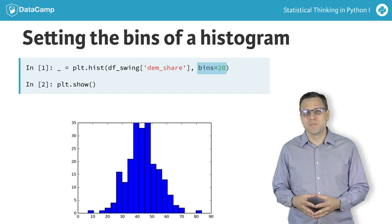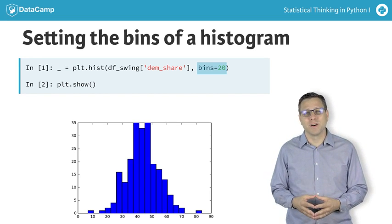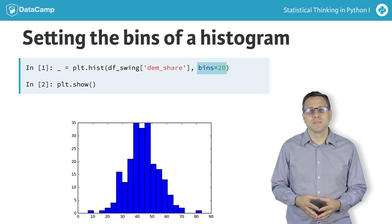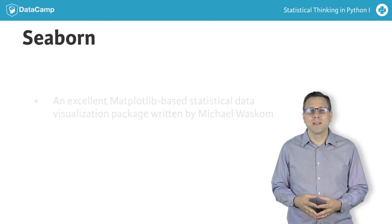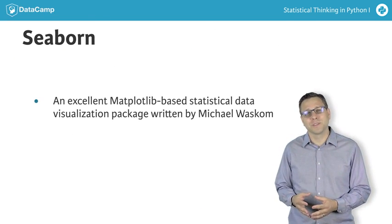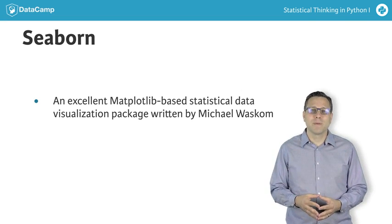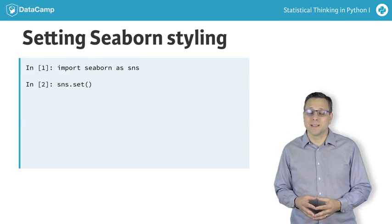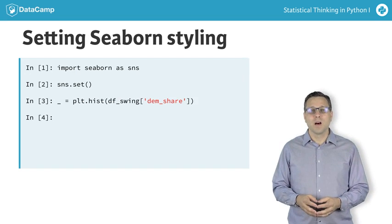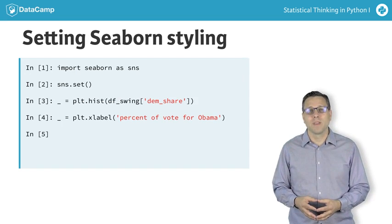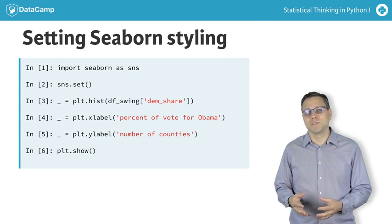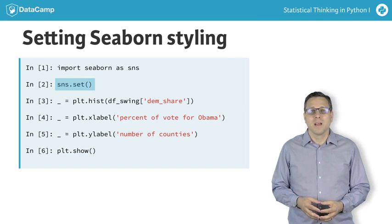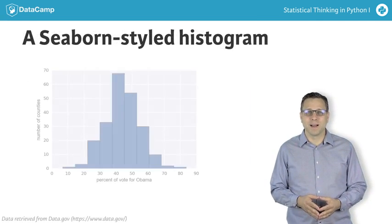The plots we've made so far are stylized with Matplotlib's default settings. I prefer to use the default settings of Seaborn, an excellent Matplotlib-based statistical data visualization package written primarily by Michael Waskom. We import it as sns, as is traditionally done. Upon import, we can set the style to Seaborn's default using the sns.set function. This results in nicely formatted plots.